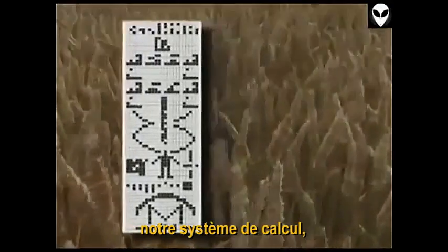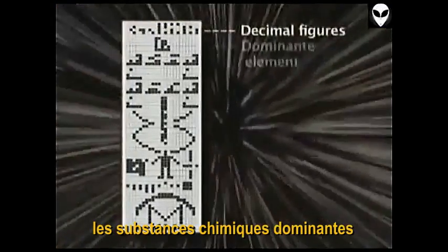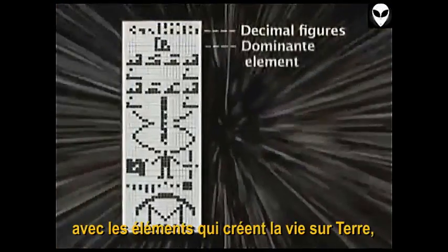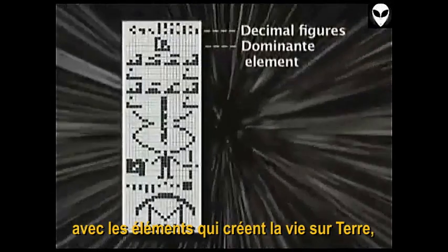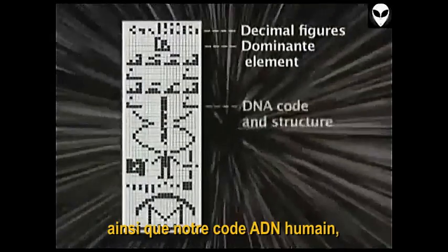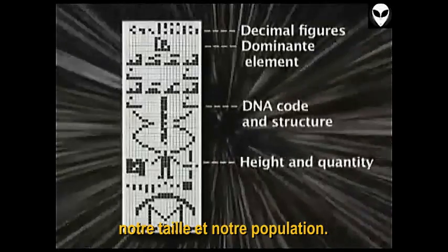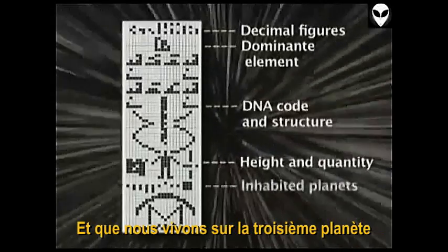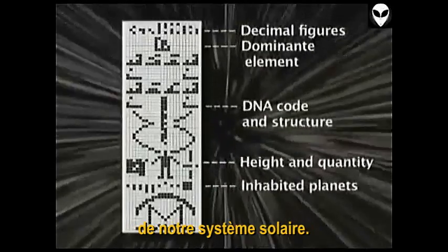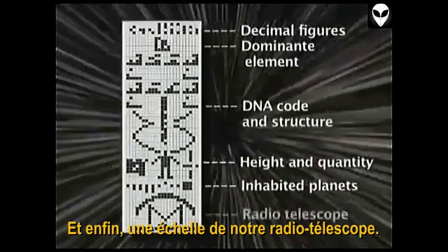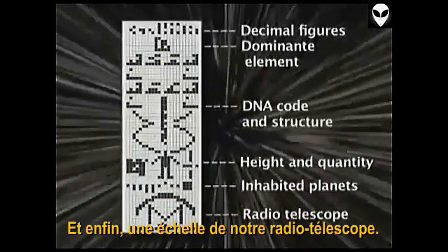Sagan's message explained our calculation system, the dominant chemical substances within the elements that create life on Earth, our DNA code, humans' height and quantity, that we live on the third planet in our solar system, and lastly a sketch of our radio telescope.